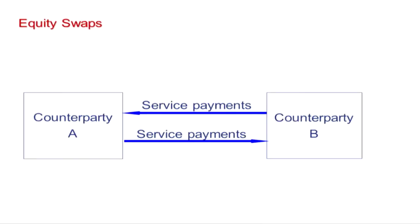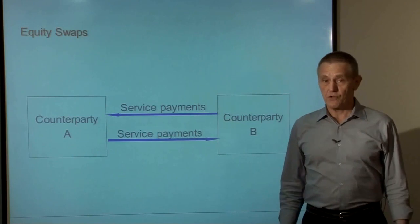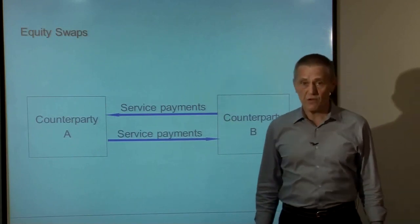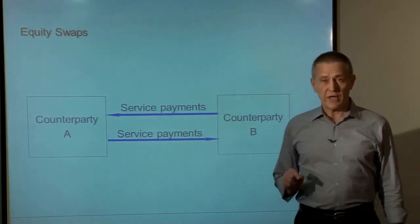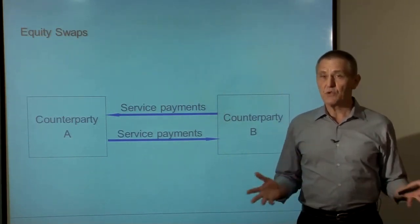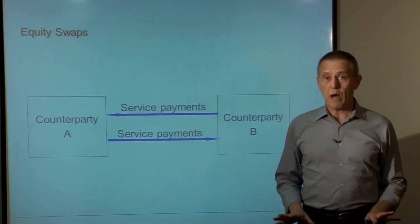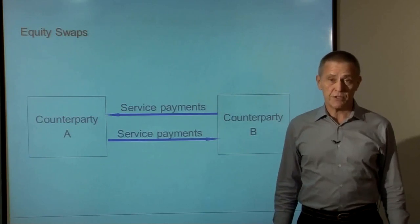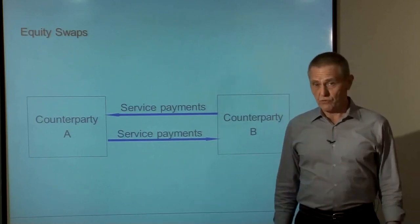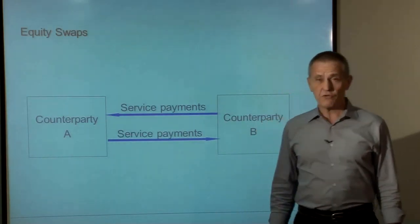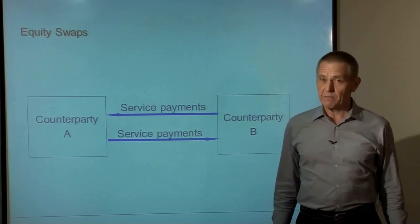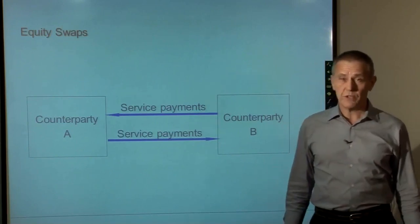A swap is nothing more than an over-the-counter contract between two counterparties — generically counterparty A and counterparty B. In the vast majority of swap transactions, at least one of the counterparties is a swap dealer. Oftentimes both counterparties are swap dealers trading with one another as ways of managing the risk of their swaps book. But we'll focus on swaps where at least one counterparty is a client — someone using the swap for either risk management or speculative purposes — because they find it more efficient to do so through a swap rather than trading the related equity securities themselves.